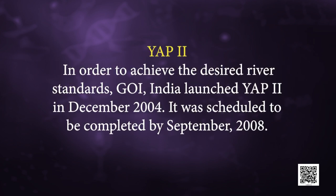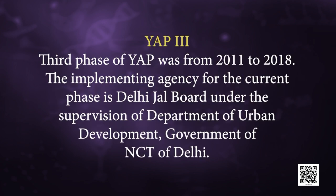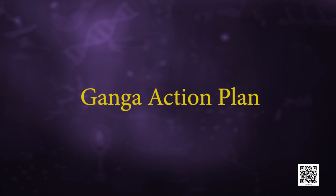Next is YAP Phase 2. In order to achieve the desired river standards, the Government of India launched YAP 2 in December 2004, scheduled for completion by September 2008. Next is YAP Phase 3. The third phase of YAP was from 2011 to 2018. The implementing agency for the current phase in Delhi is the Jal Board under the supervision of the Department of Urban Development, Government of NCT of Delhi.